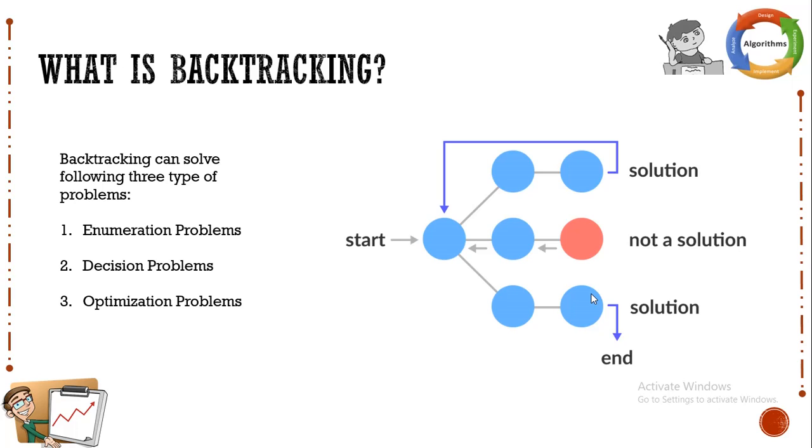Second are the decision problems wherein a solution is given in terms of yes or no. And the last one is the optimization problem wherein the optimal solutions are required which maximize or minimize the given objective function as per the constraints of a given problem. So these three types of problems can be solved using backtracking.